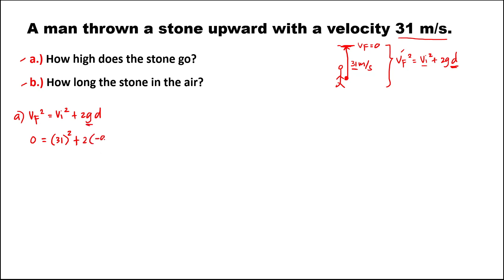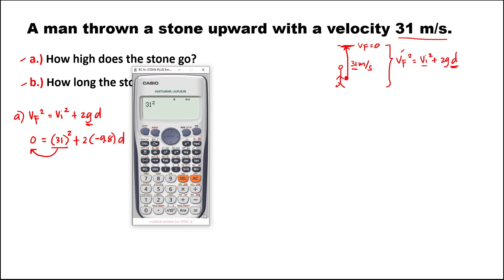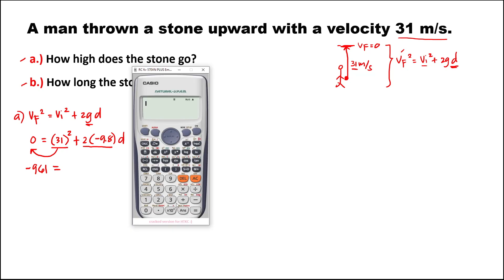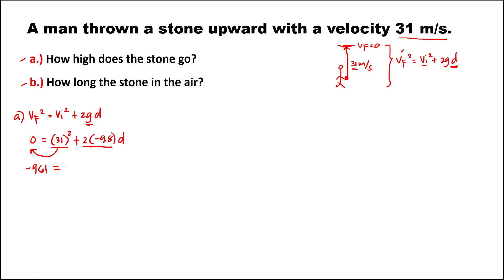Gravity is a constant: negative 9.8 times the displacement. For 31 squared, transpose to the other side. 31 to the power 2 is 961, then transposed becomes negative 961. This equals 2 times negative 9.8, which gives negative 19.6. So we have negative 19.6 times the displacement.